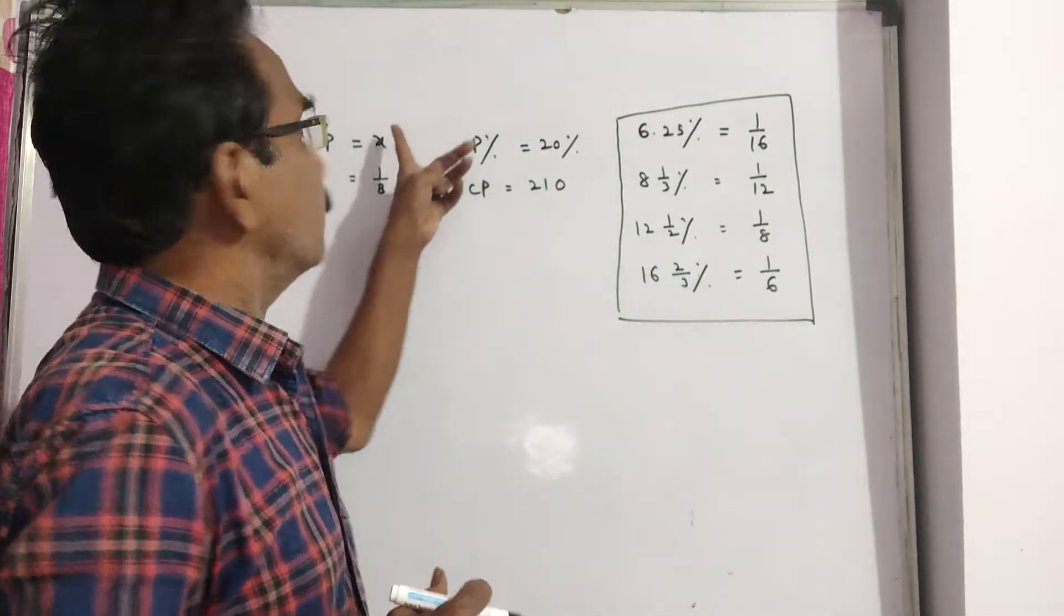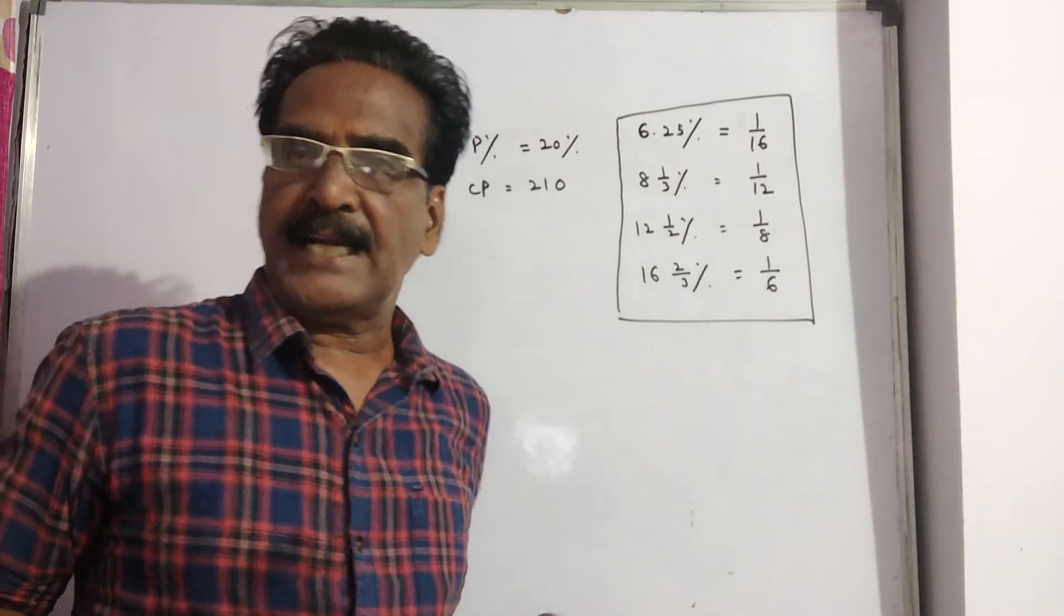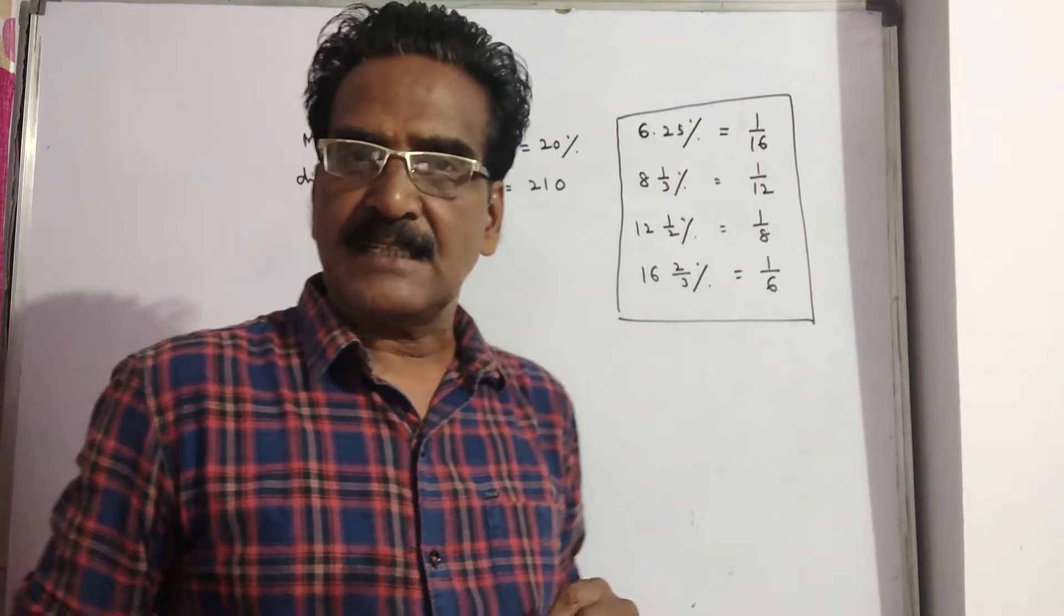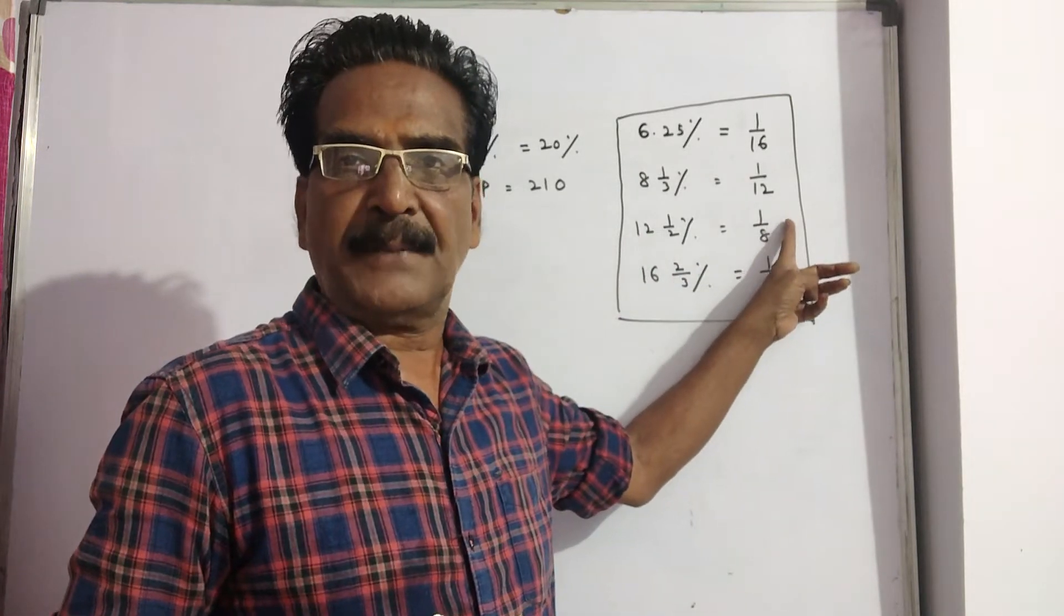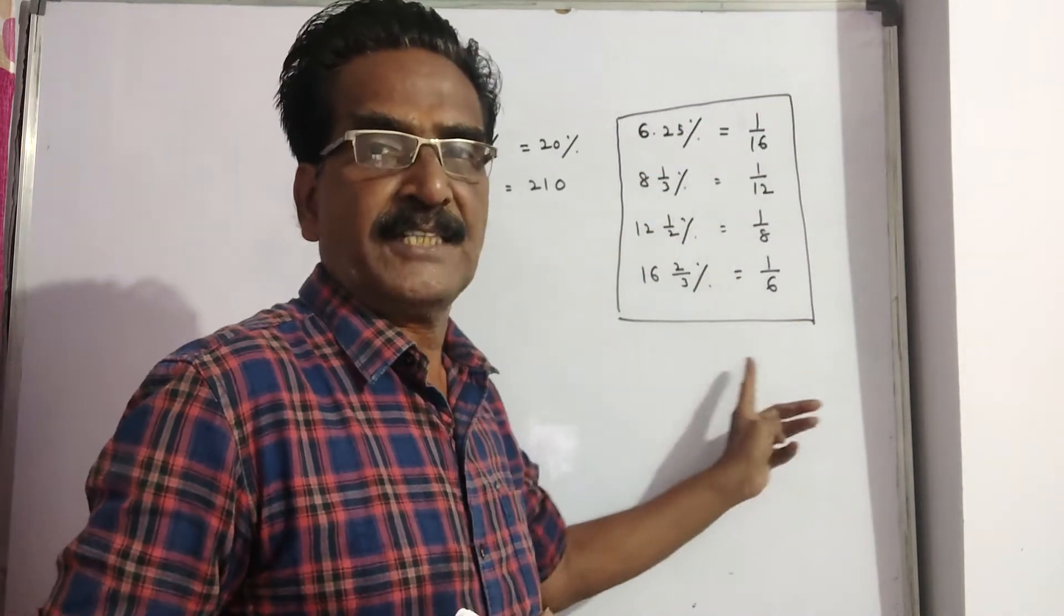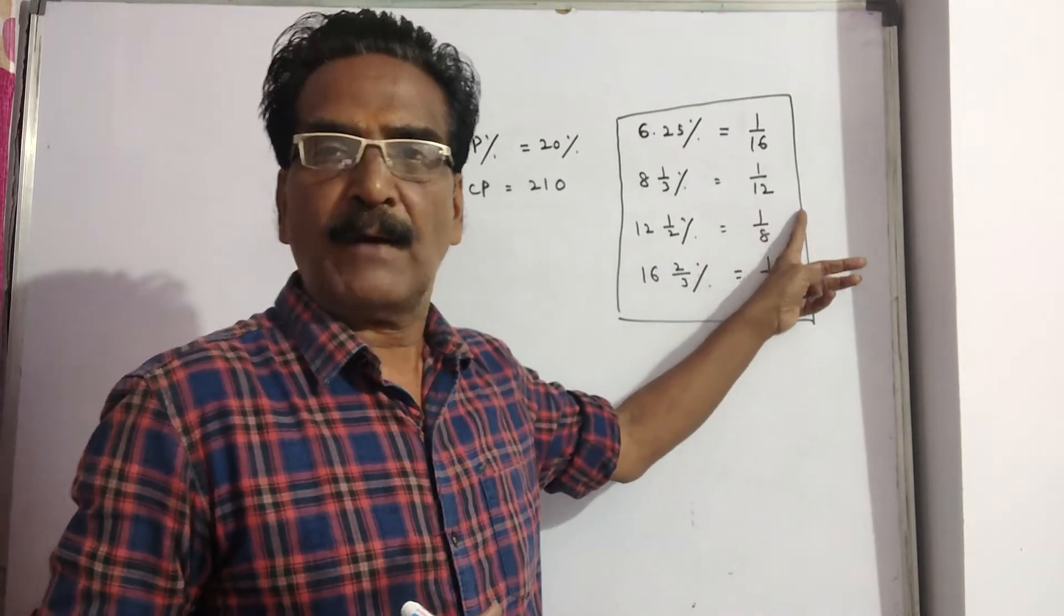Friends, say the market price of the article is X and 12.5% discount is given on this. 12.5% fractional value is equal to 1 by 8. These are important points friends. So 12.5% is equal to 1 by 8.